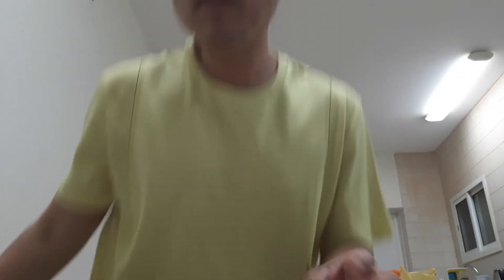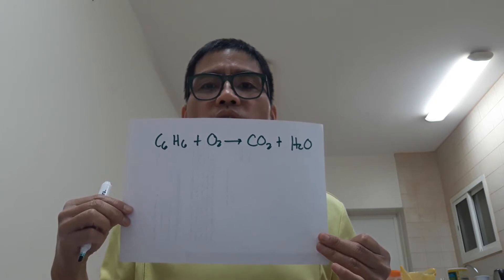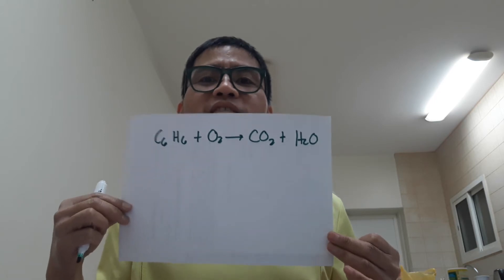Benzene undergoes combustion to produce CO₂ and water. First, we need to balance the equation. The unbalanced equation is: benzene plus oxygen gas yields carbon dioxide plus water. Balance this equation.